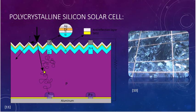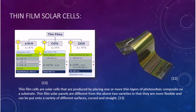For the thin films, we can classify three types. The thin film solar cells are produced by placing one or more thin layers of photovoltaic composite on a substrate. Thin film solar panels are different from the above two varieties in that they are more flexible and can be put onto a variety of different surfaces, curved and straight.